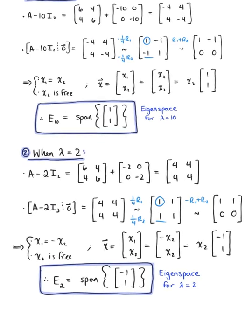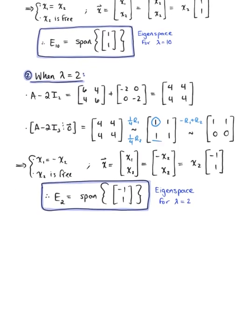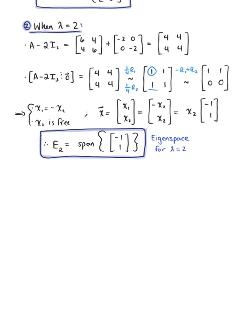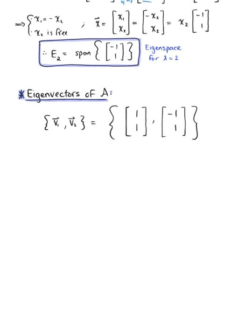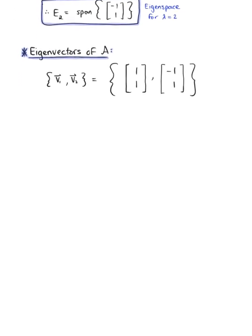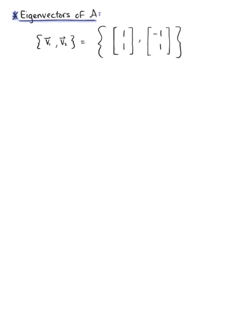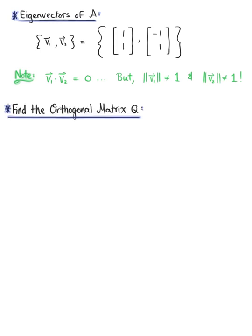We can conclude that the eigenvectors of matrix A are [1, 1] and [-1, 1]. Looking at these eigenvectors, we can confirm that they are orthogonal to each other. However, they are not unit vectors, so in order to find the column vectors of orthogonal matrix Q, we need to normalize them.